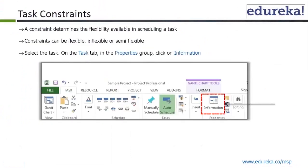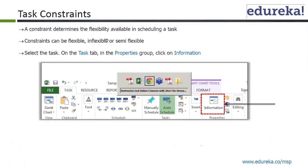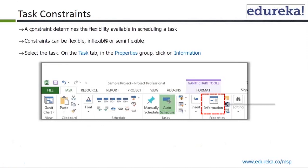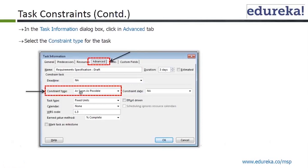Task constraints: a task constraint determines the flexibility available in scheduling a task. Constraints can be flexible, inflexible, or semi-flexible. Select the task, then on the task tab in the properties group, click on information. Then go to the advanced tab where you have the constraint type dropdown with various options.